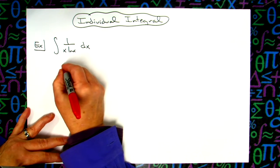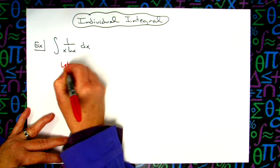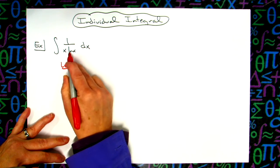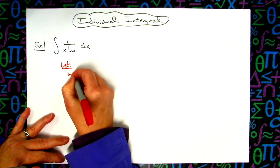First thing we're going to do is choose our u for our u substitution. So we are going to let u equal the natural log of x.